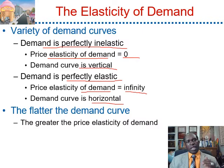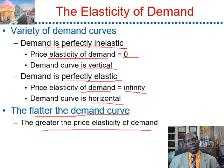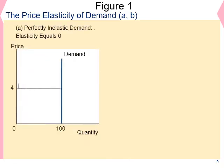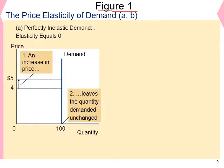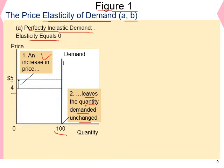We can say that the flatter the demand curve, the greater the elasticity of demand. Figure 1 summarizes the price elasticity of demand in panels A through E. Panel A shows perfectly inelastic demand where the value of the elasticity is equal to 0. In this case, there is an increase of the price from $4 to $5, and that increase leaves the quantity demanded unchanged. You can see that the demand curve is vertical — there is no change in the quantity.